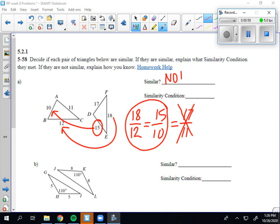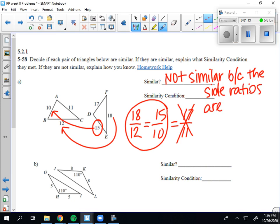So they're not similar, because the side ratios are not all the same. Because 17 divided by 11 is 1.545, it's not actually 1.5.